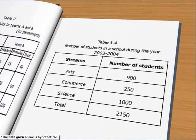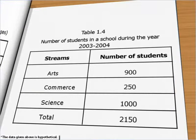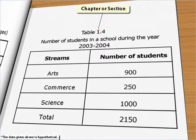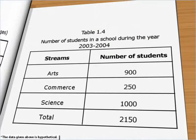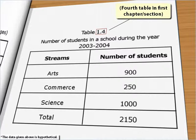Sometimes, table numbers like 1.1, 1.2, etc. are also used. In this case, the first digit refers to the chapter or section and the second digit indicates its order. For example, table 1.4 would mean the fourth table in the first chapter or first section.